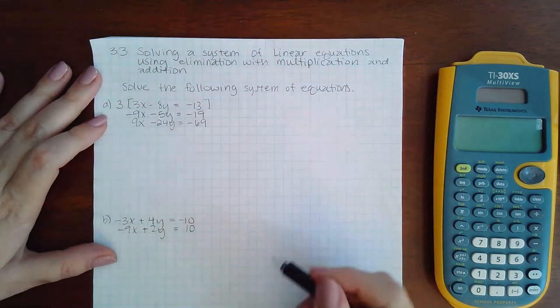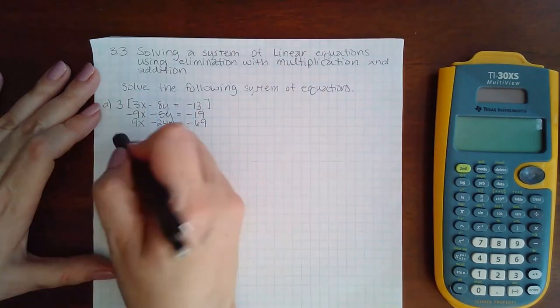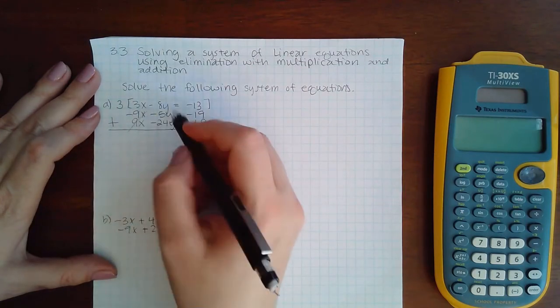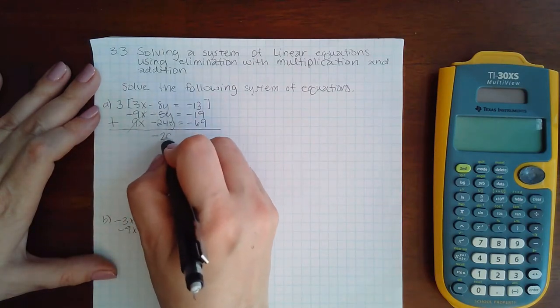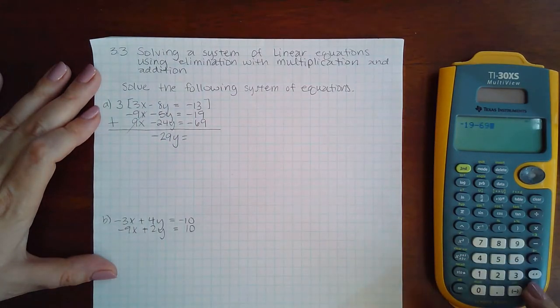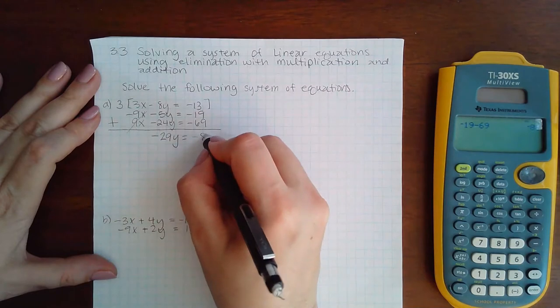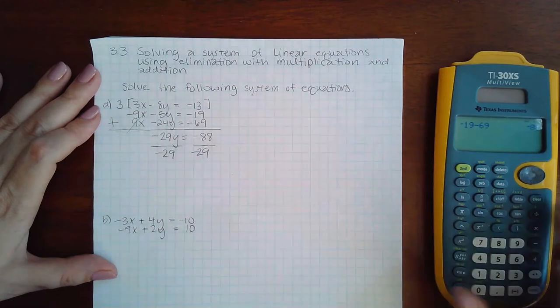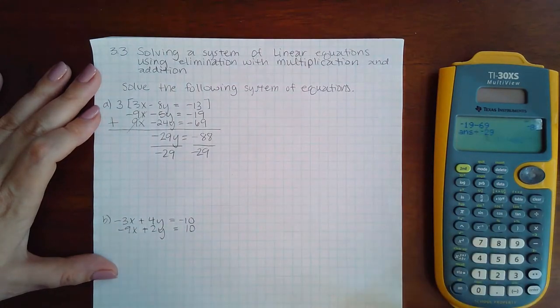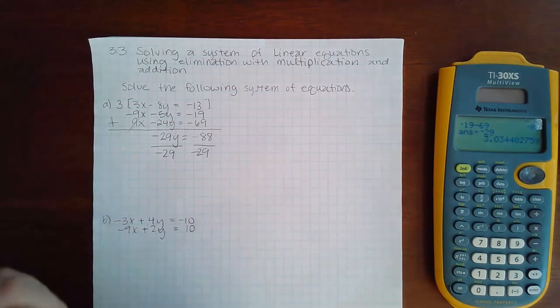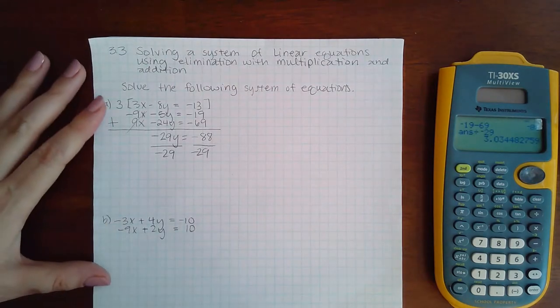So then now I can combine the two together using the addition method, so negative 9x plus 9x, this would be negative 29y, and then negative 19 minus 69 is negative 88. And if I divide negative 29, oh that is not going to be a nice number and that is okay, sometimes that happens.